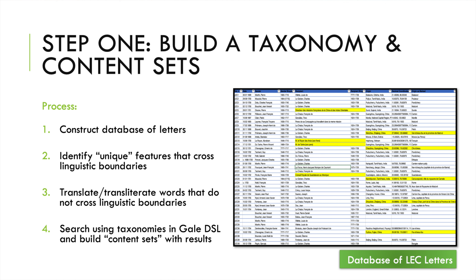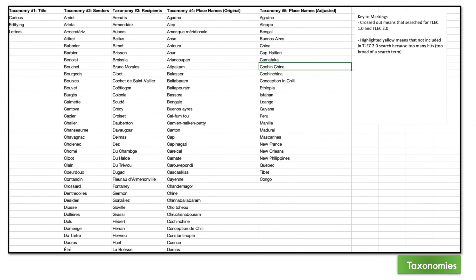I then used these search terms to identify documents in ECHO that reference, replicate, or incorporate the LEC. The taxonomies I came up with ranged from the title — Curious Edifying Letters — to the names of senders and recipients of letters, and then place names both in their original form and in translated or adjusted forms.